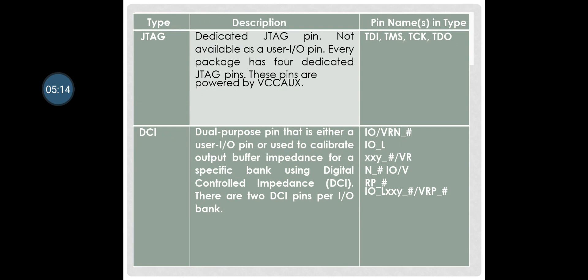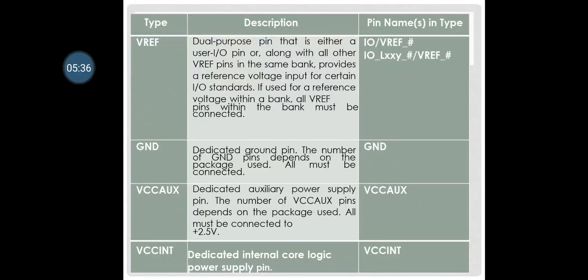The next dual-purpose pins are either user input/output pins or used to calibrate output buffer impedance for a specific bank using digital control impedance (DCI). There are 2 DCI pins per input/output bank. The next pins are VREF — dual-purpose pins that either serve as user input/output or provide a reference voltage input for certain input/output standards. All VREF pins within the same bank must be connected together. The dedicated ground pins must all be connected, and the number of ground pins depends on the package. VCCAUX are dedicated auxiliary power supply pins connected to +2.5 volts.